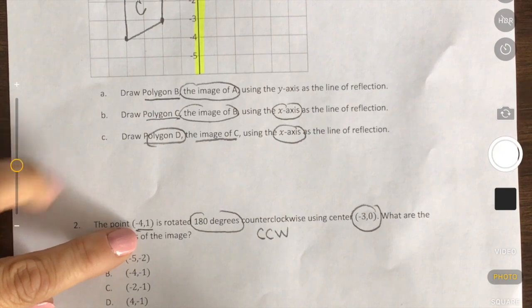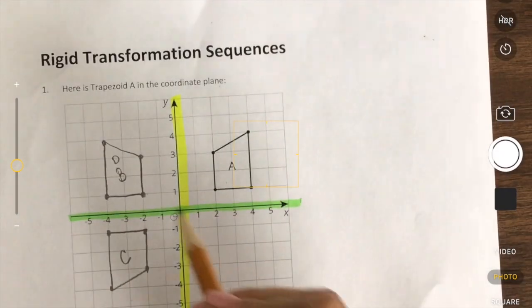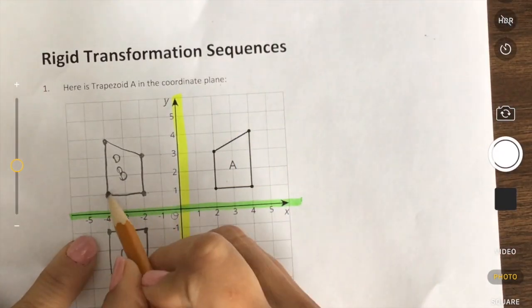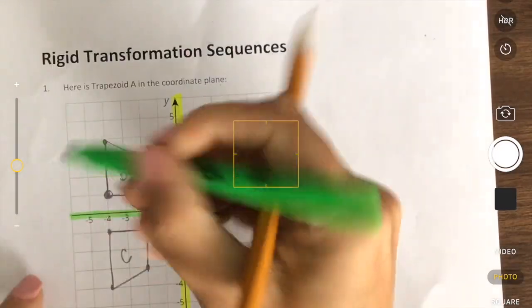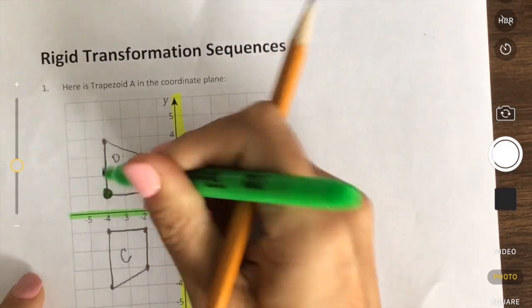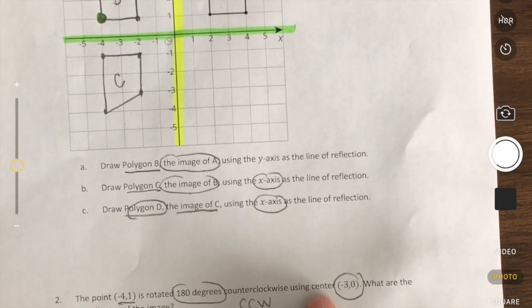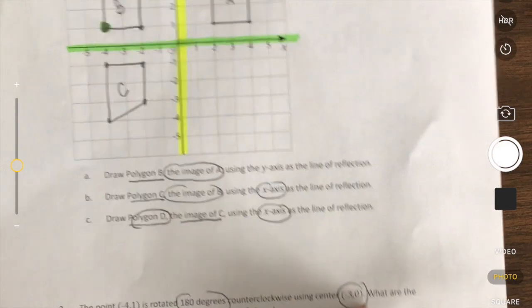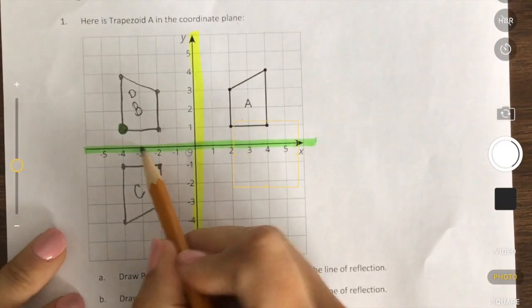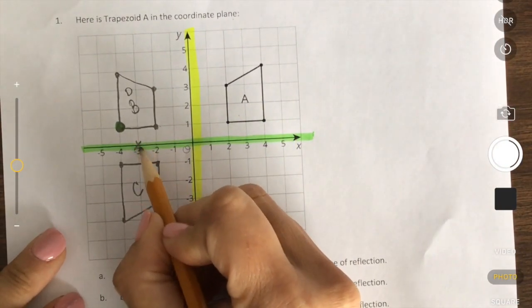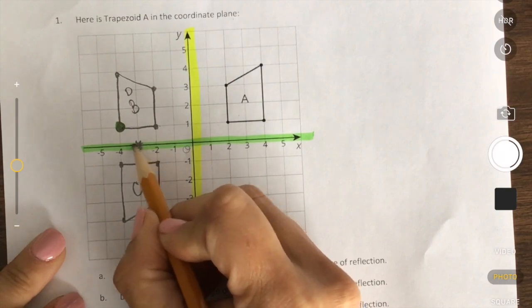Let's use our previous graph and help us with this. So negative 4, 1. We're going to rotate it 180 degrees around the center that's negative 3, 0. So negative 3, 0 is right here. So this is going to be our spin point.